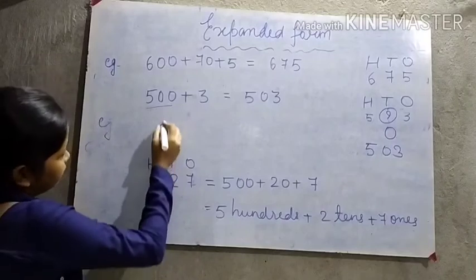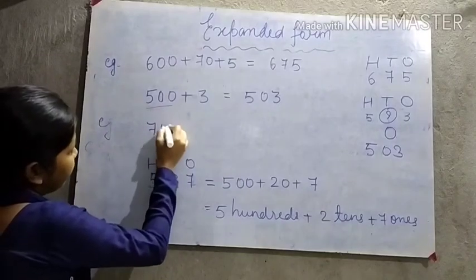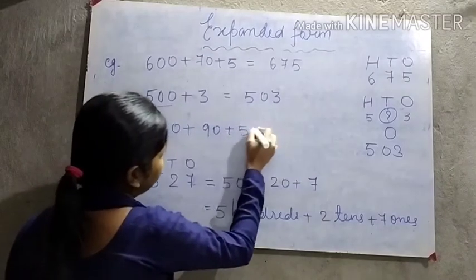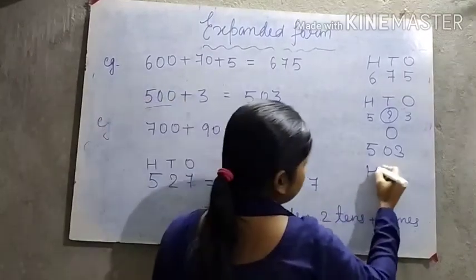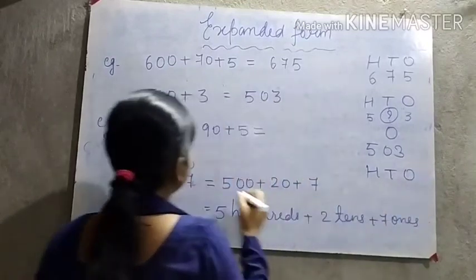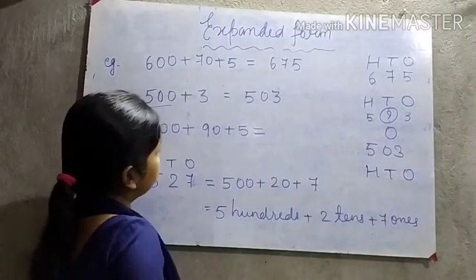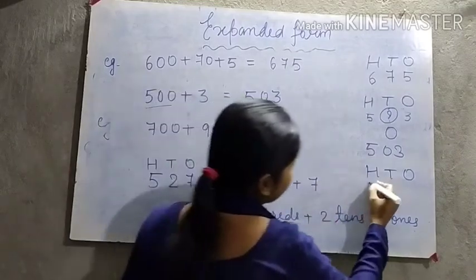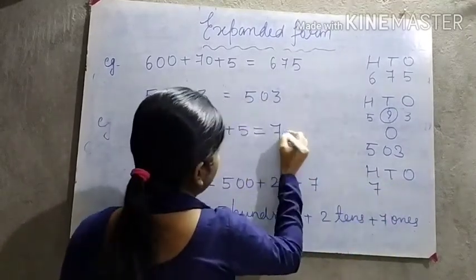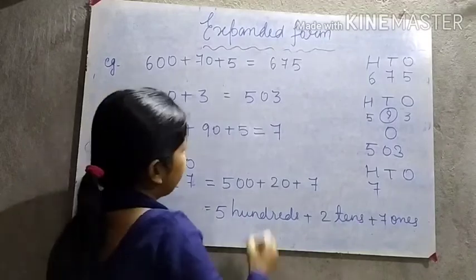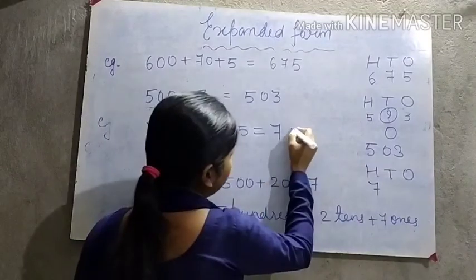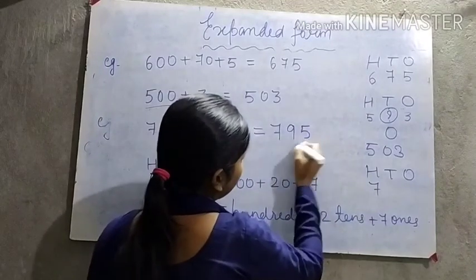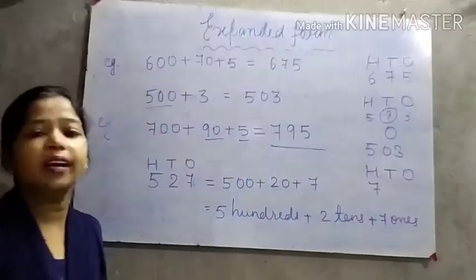Let's take one more example: 700 plus 90 plus 5. We will assign its position — hundreds, tens, and ones. 700 comes under hundreds, so we write here only 7. 90 is in the tens column, so we write here only 9. 5 is in the ones place, so we write here only 5. So our answer is 795.